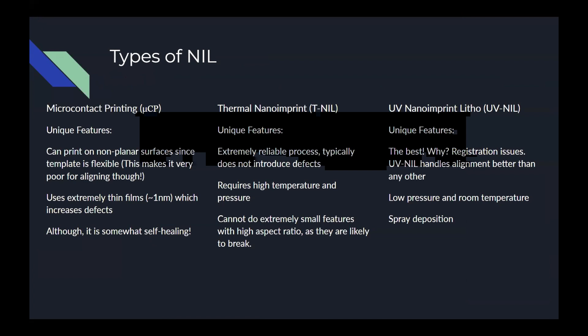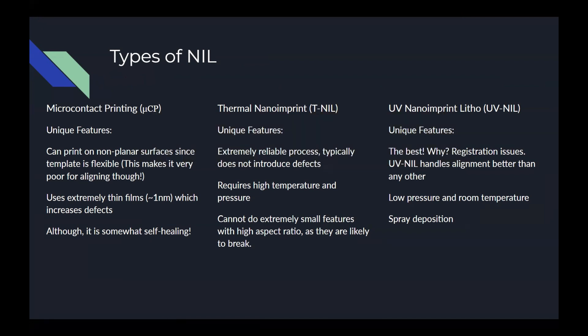Microcontact uses a flexible mask — which is really a negative of the original mask — to transfer an extremely thin film onto a gold-plated substrate. Films this thin are rarely seen in industry as the chance of defects is increased, so this technique is typically only used in schools or research labs.